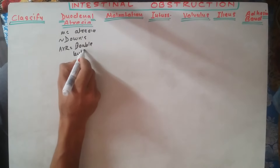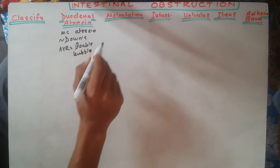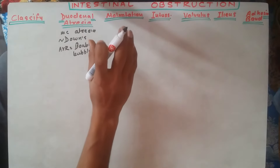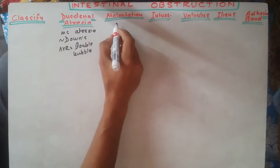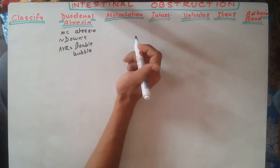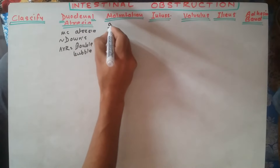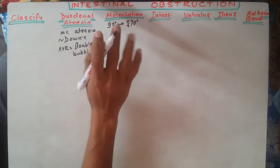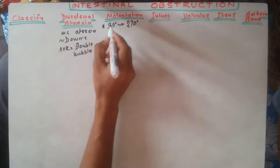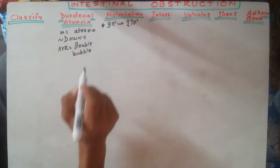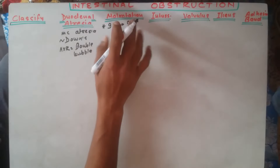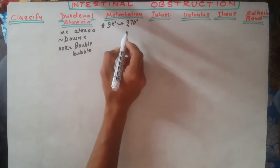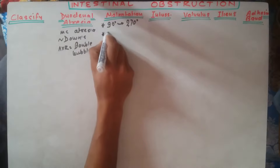Malrotation is simply an abnormal rotation of the intestine during development. The intestine undergoes initially a 90-degree clockwise rotation and then a 270-degree anti-clockwise rotation. If the rotation in any portion is abnormal, that is called malrotation — interference in the process of normal rotation of the midgut. Malrotation is usually seen in the midgut.